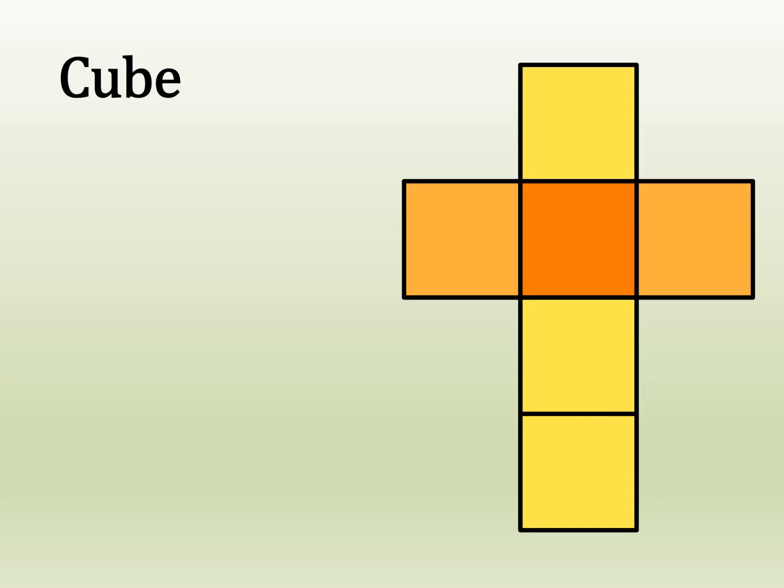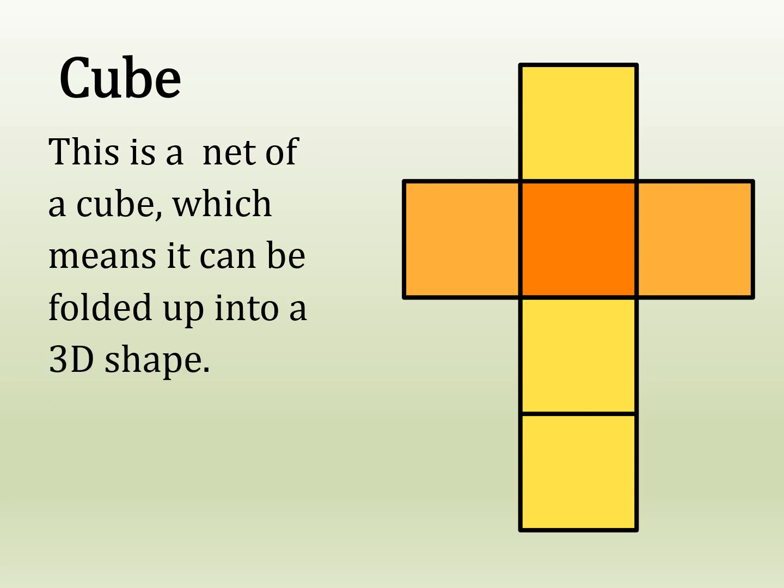This is a net of a cube, which means it can be folded up into a 3D shape. There are 11 different nets that you can fold up to make a cube.